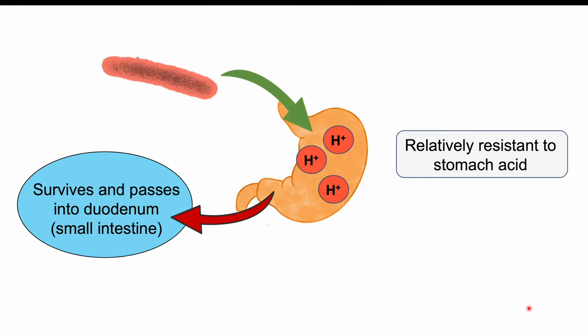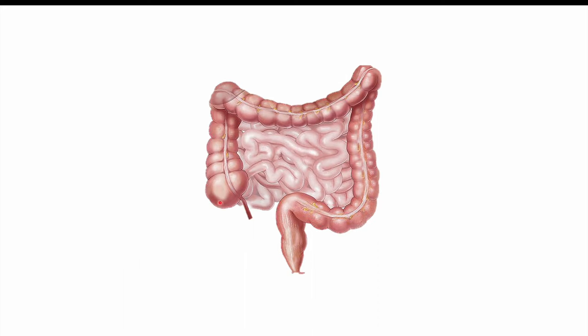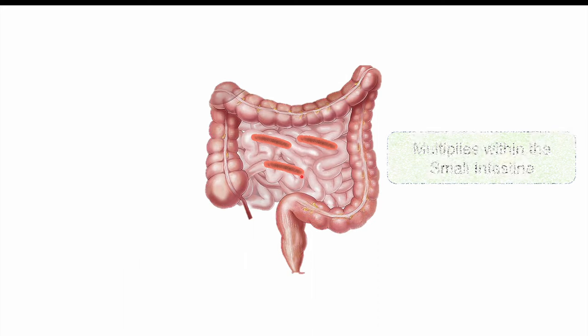Once it survives the stomach acid, it passes through the stomach into the duodenum, which is the first part of the small intestine. Once in the small intestine, it begins to multiply, and many of these organisms start to proliferate.